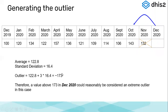In this scenario, if my threshold or outlier is 173, that is my predictor's value. Any value entered above 173 — so in December data entry if I enter 180 or 200 — it will show a validation alert that this value is outside the threshold.